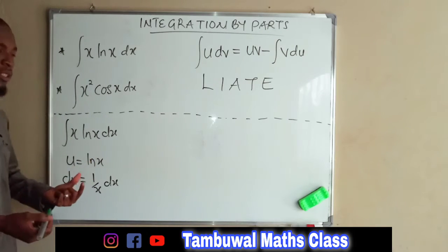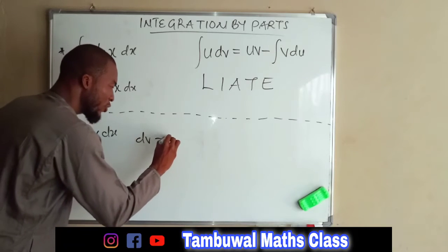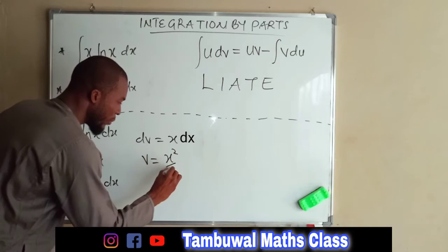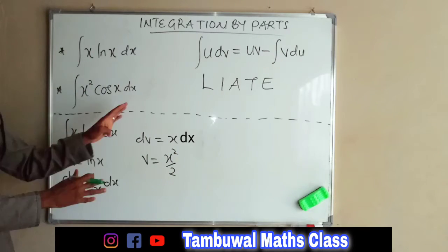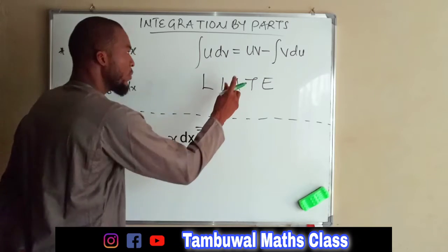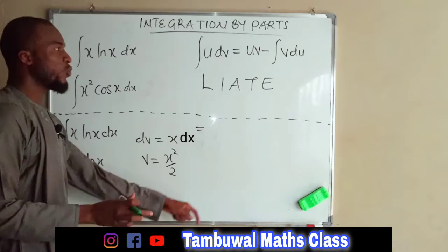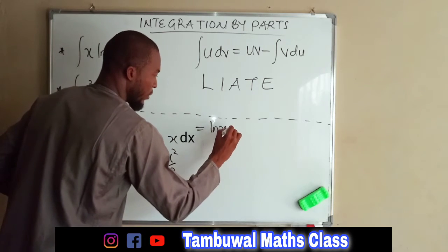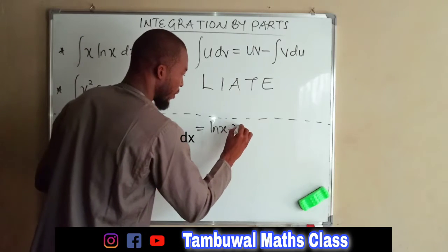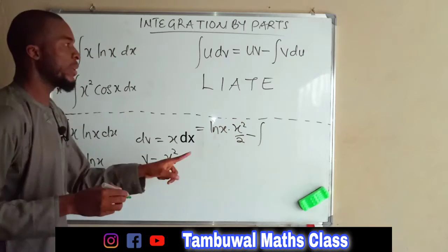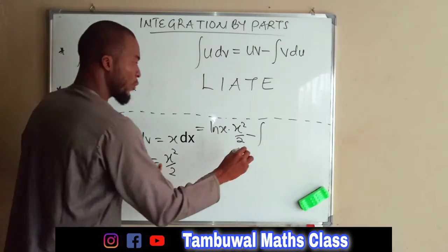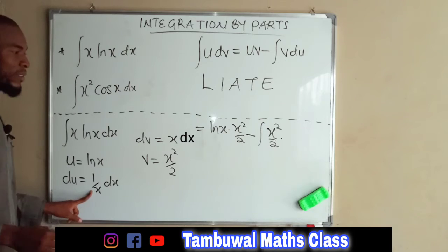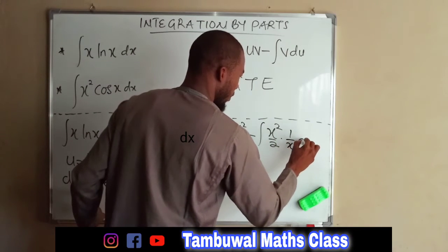Now we are going to set the other function to be DV, so DV equals X. Integrating both sides, we obtain V equals X squared divided by 2. Now we are free to substitute these terms into our main formula. We obtain U times V: natural log of X times X squared divided by 2, minus the integral of V dU, which is X squared over 2 times 1 over X dX.